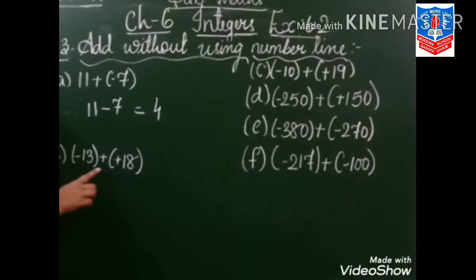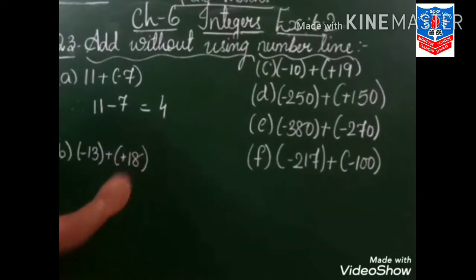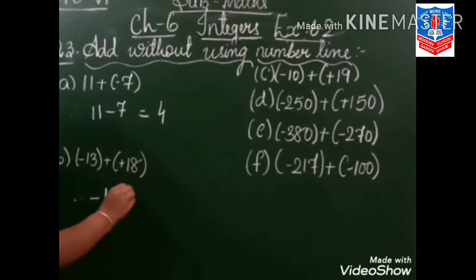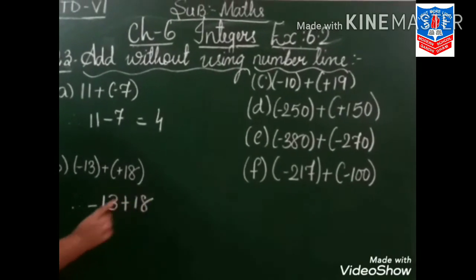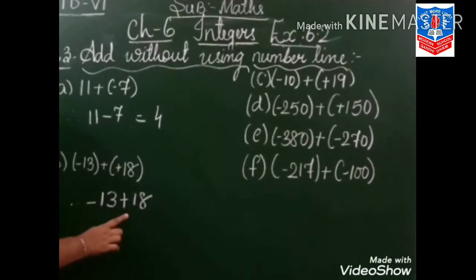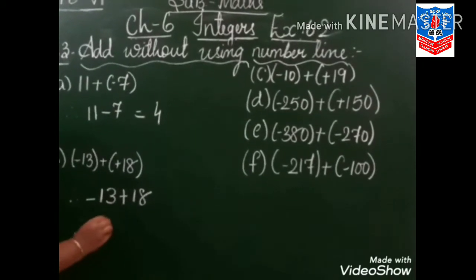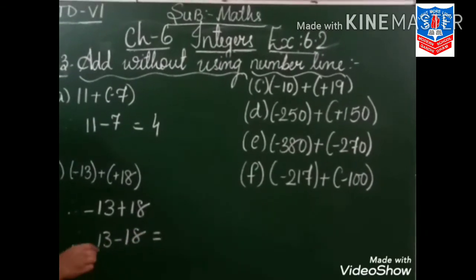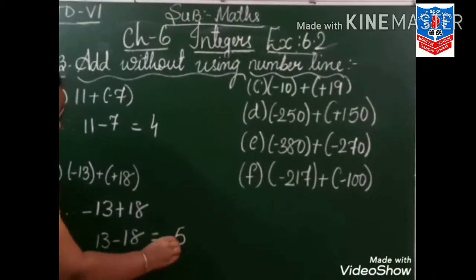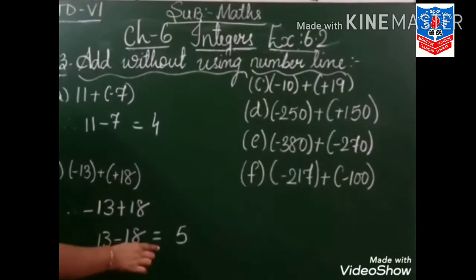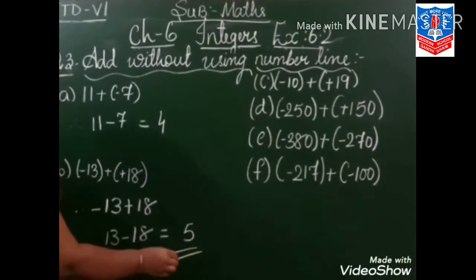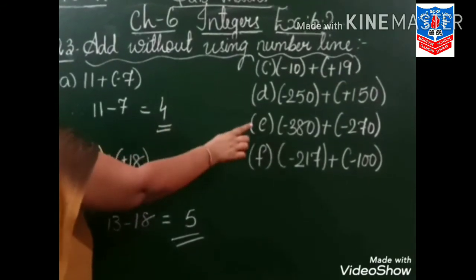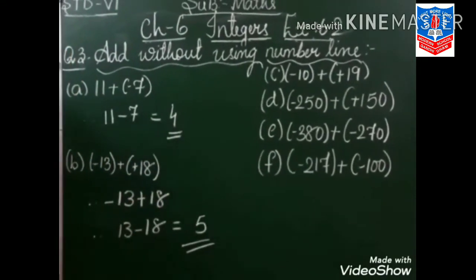Minus 13 plus 18. Now, minus plus plus is plus 18. Minus plus minus — so 18 minus 13 is 5, and the greater sign is plus 18, which is plus. So our answer is 5. Now question C, D, E, and F is your homework.